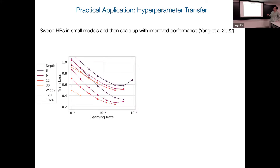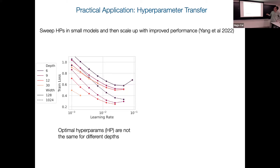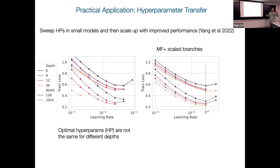Does this do anything useful? One motivation is hyperparameter transfer. If I crank up depth, it would be nice if a learning rate that works in a small-depth model also works in a large-depth model. Normally that doesn't happen — a learning rate that works at depth 6 blows up at depth 30. But with the 1 over square root of L scaling trick, you converge to a stable limit, and the optimal learning rate is consistent across different depths and different widths.